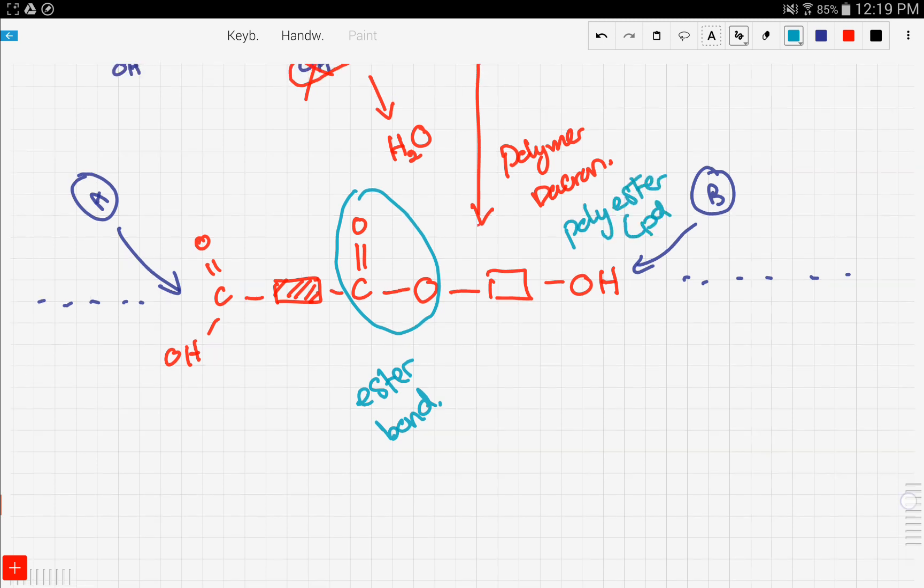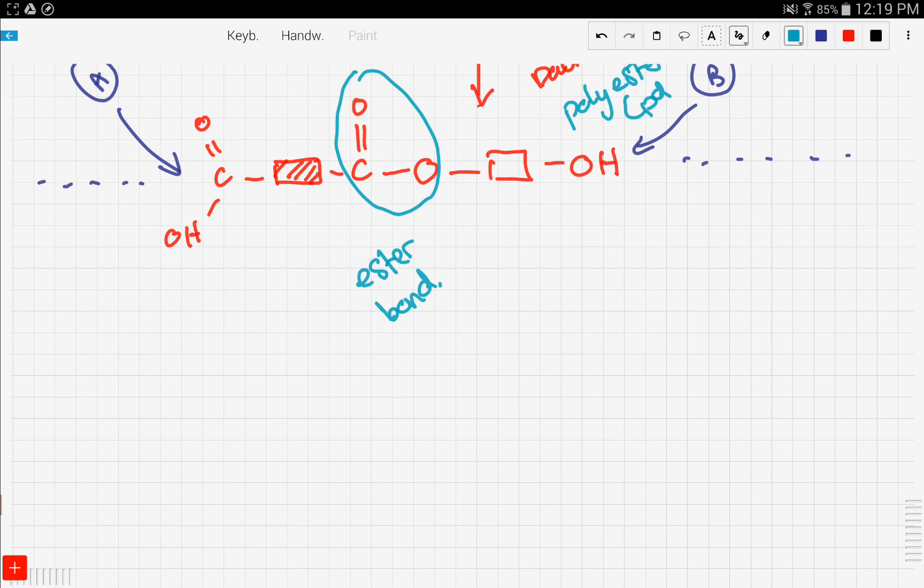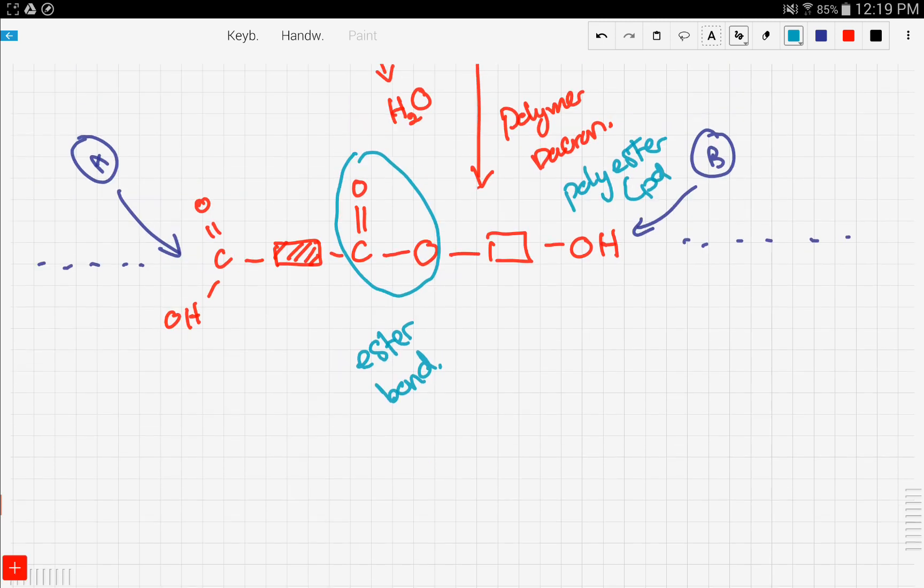And if we form more units of this, we get Dacron, and this is why Dacron is called a polyester compound. And you often hear this in shops where you go shopping and you ask the salesperson what's this made of, he tells you polyester. So this is polyester or Dacron because we have an ester bond.